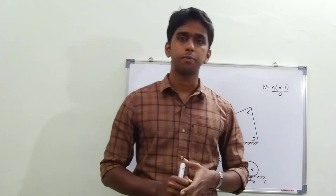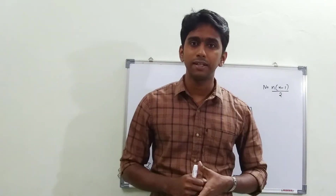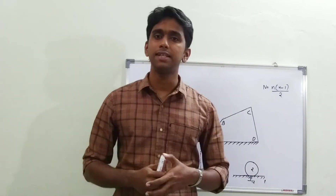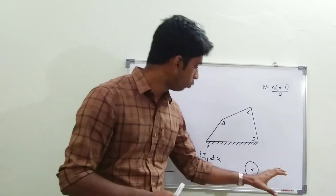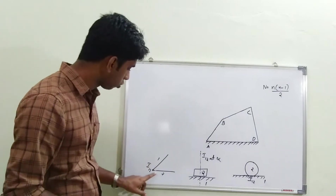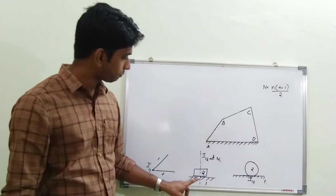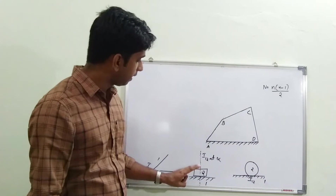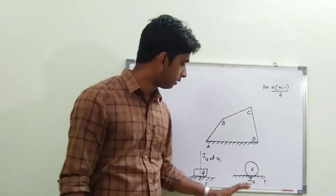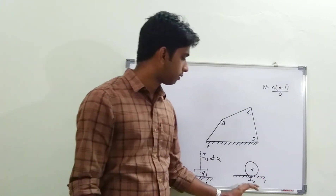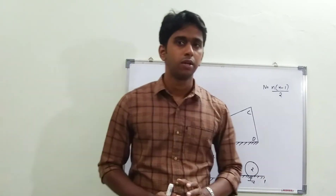Using these rules we can easily locate the primary instantaneous centers. We can classify instantaneous centers into two types: primary instantaneous centers and secondary instantaneous centers. Primary instantaneous centers can be located by means of visual inspection itself using these rules — in a pivoted joint the pivot center is the I-center, in a sliding pair it lies at infinity perpendicular to motion, and in pure rolling contact the contact point is the I-center.